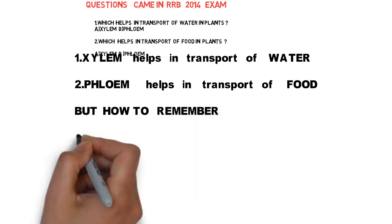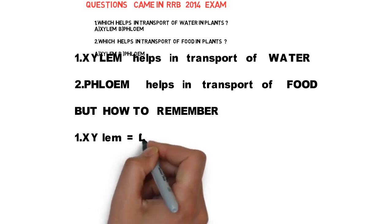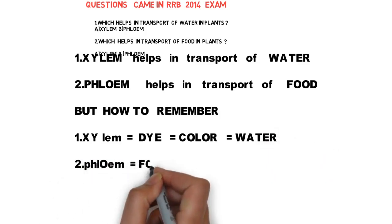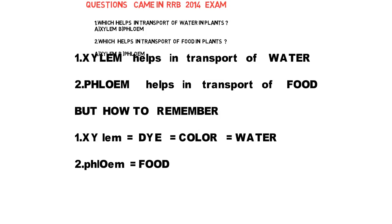Let us see the trick. Friends, concentrate on the first two letters of xylem: XY. How would you spell XY? It's similar to 'dye.' XY → dye. What is dye? It's a color. Color is in the form of water. So: xylem → XY → dye → water. Repeat this: XY, dye, water. If you repeat this a few times, you will never forget it.